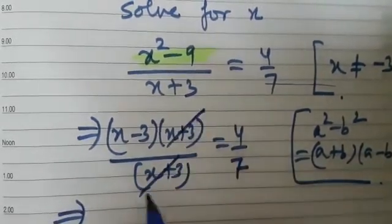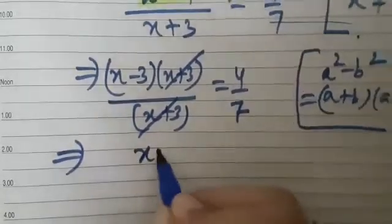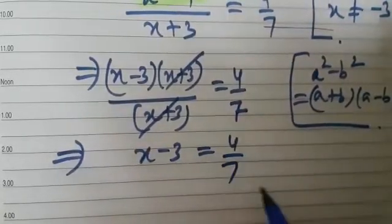This implies now we can cancel x plus 3 by x plus 3, and we are left with x minus 3 equals 4 upon 7.